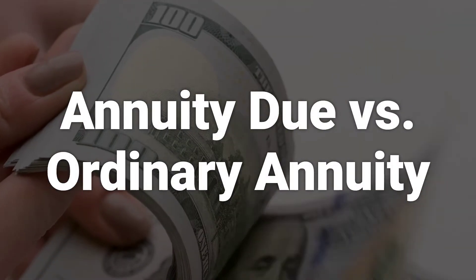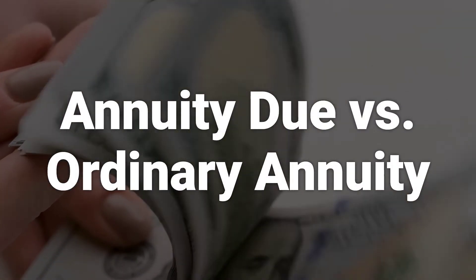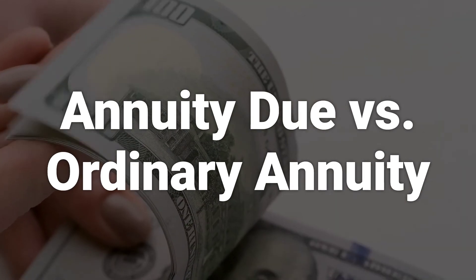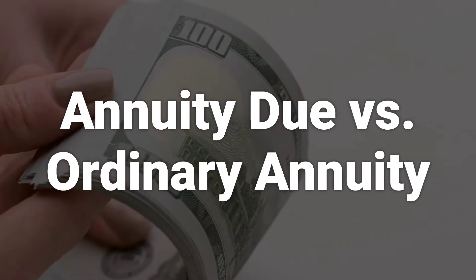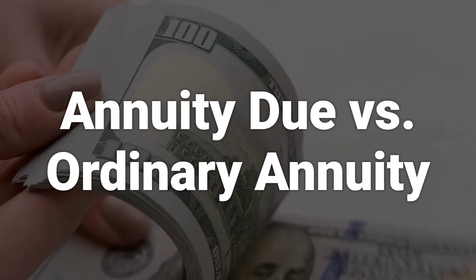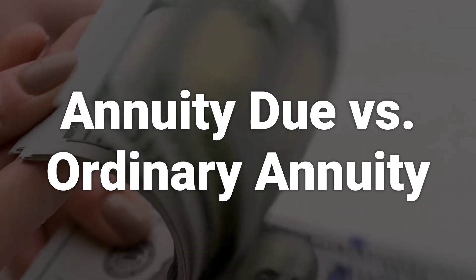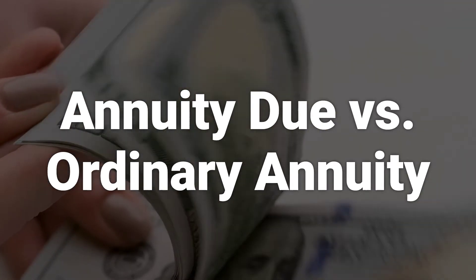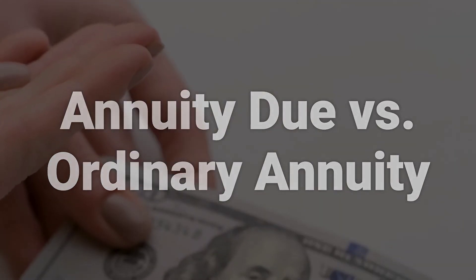An annuity due payment is a recurring issuance of money upon the beginning of a period, while an ordinary annuity payment is made at the end of a period. The timing of these payments is critical based on opportunity costs, making annuity due more beneficial for the recipient.